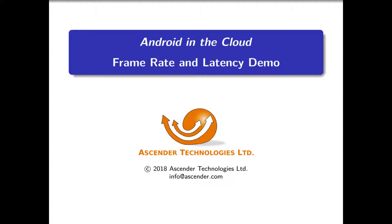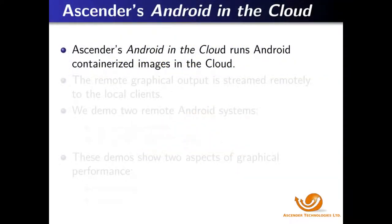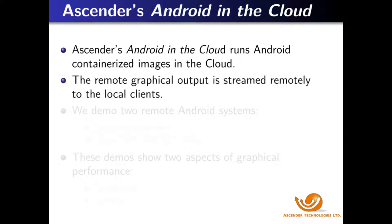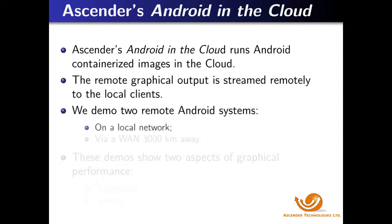Despite the six orders of magnitude difference in the distances of the two systems demoed, graphical performance is shown to be quite similar. A sender's Android in the Cloud runs Android containerized images in the cloud. The remote graphical output is streamed remotely to the local clients. We demoed two remote Android systems: one on a local network and the second via a wide area network more than 3,000 kilometers away — more than a factor of a million difference in distance between the cloud host and the local client.